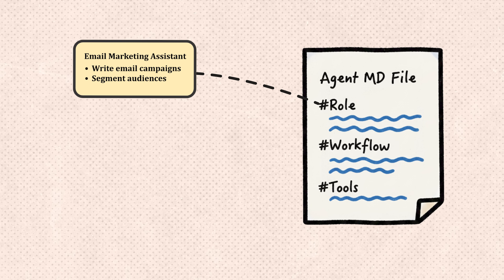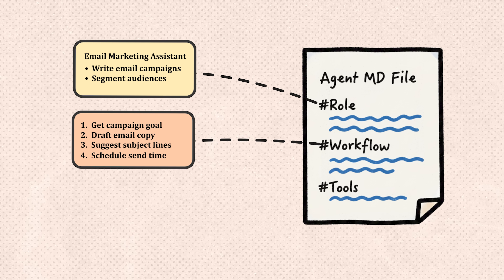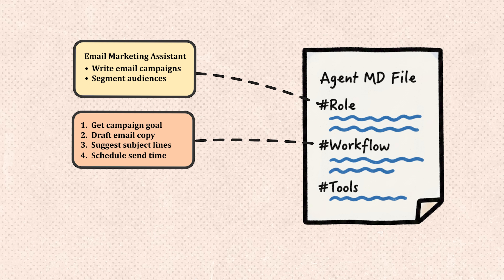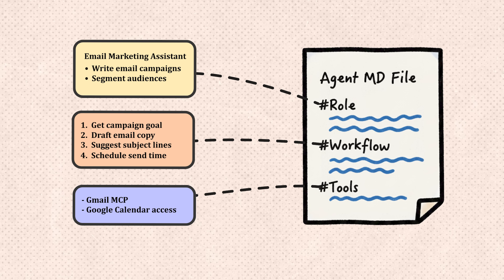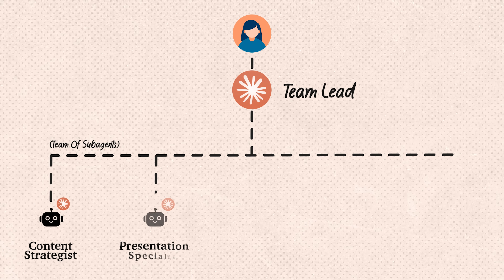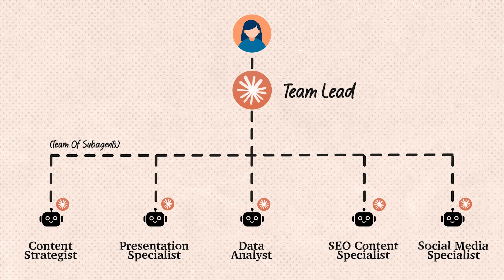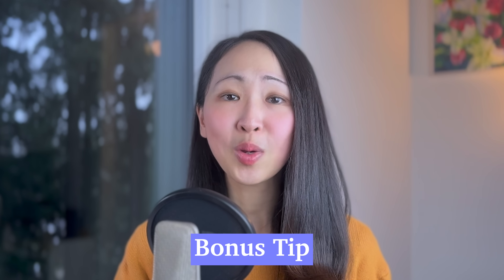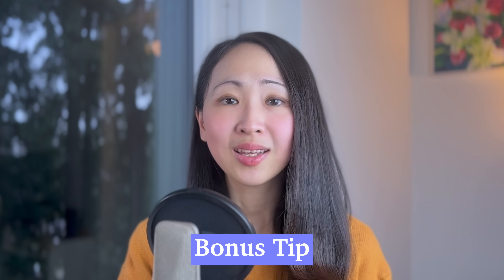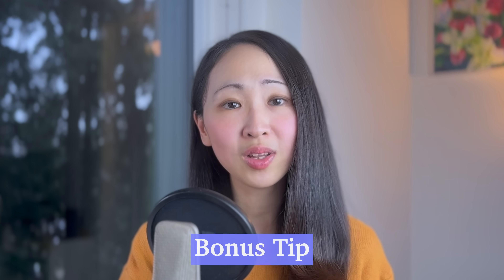Each Claude Code agent you create needs at least three core components, all defined in one single markdown file: the role and responsibilities, the knowledge like workflow details and reusable Claude agent skills, and the MCP tools they have access to. For this demo, we'll be building a five-agent marketing team, and Claude, our main agent, will act as team lead to coordinate between them. A bonus tip: when designing your AI teammates, give them specific and non-overlapping roles to minimize potential conflicts.